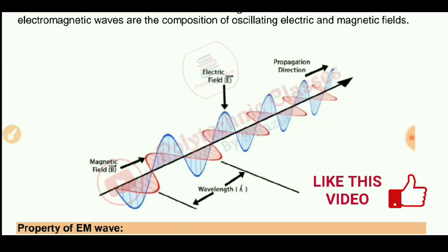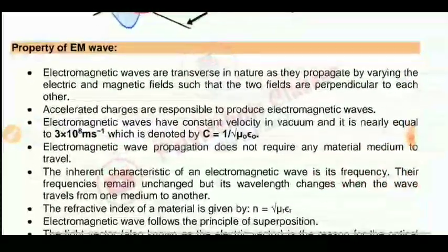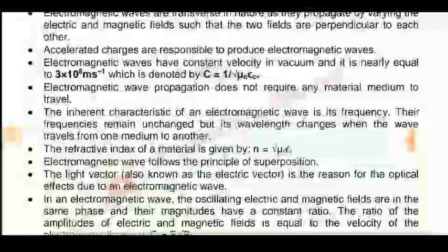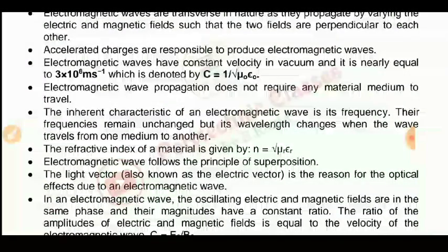All three components are perpendicular to each other. Electromagnetic waves are transverse in nature. They propagate by varying the electric field and magnetic field such that both fields are perpendicular to each other. The propagation direction is the resultant of the electric field and the magnetic field.